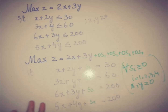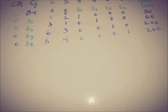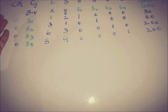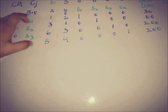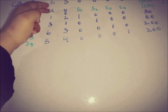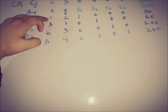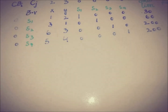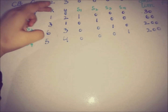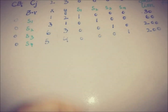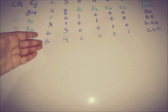The second step is making the initial simplex table using this information. We have the coefficient of the basic variables in the objective function — S1 through S4 all have zero coefficients. Cj represents the coefficients of variables in the objective function: x has coefficient 2, y has coefficient 3, and S1, S2, S3, S4 each have zero. The four rows represent the four constraints, and the solution column represents the right-hand side: 30, 60, 200, and 200.